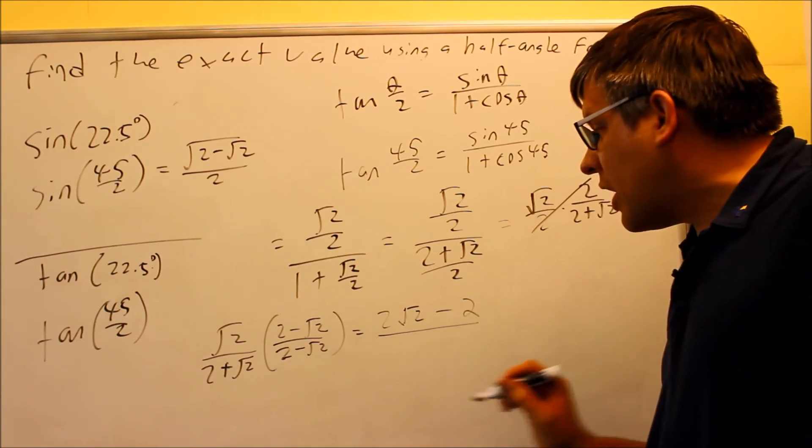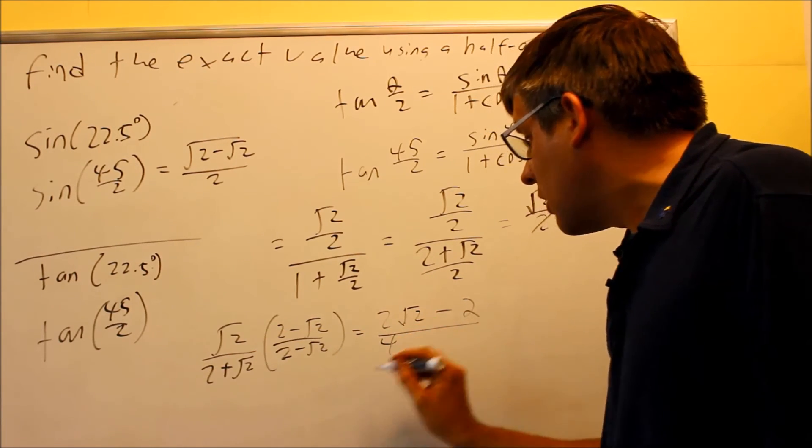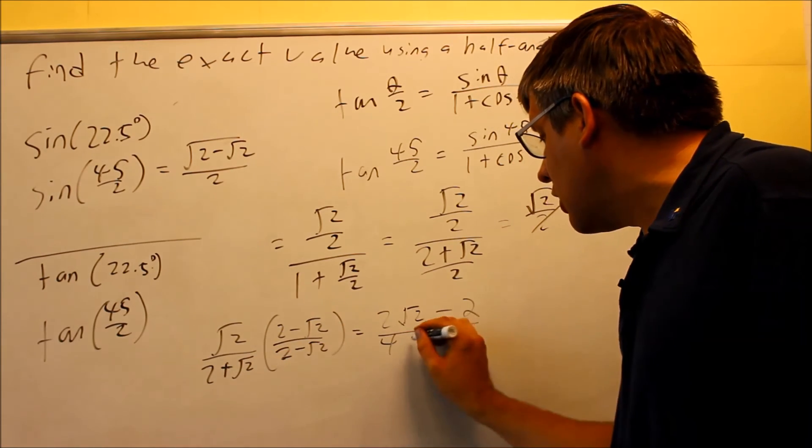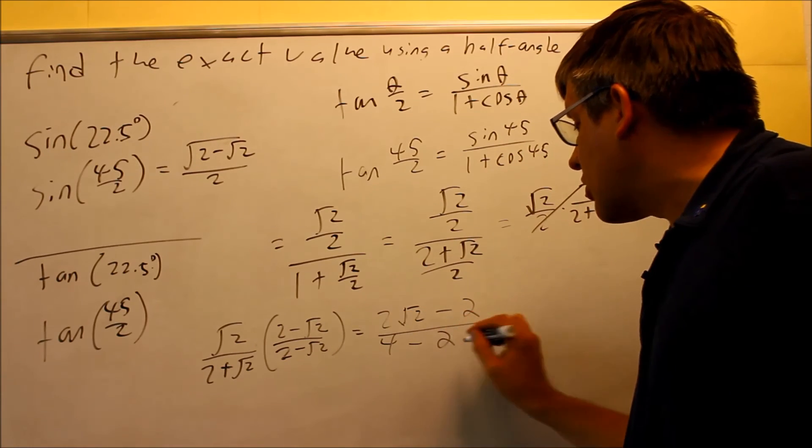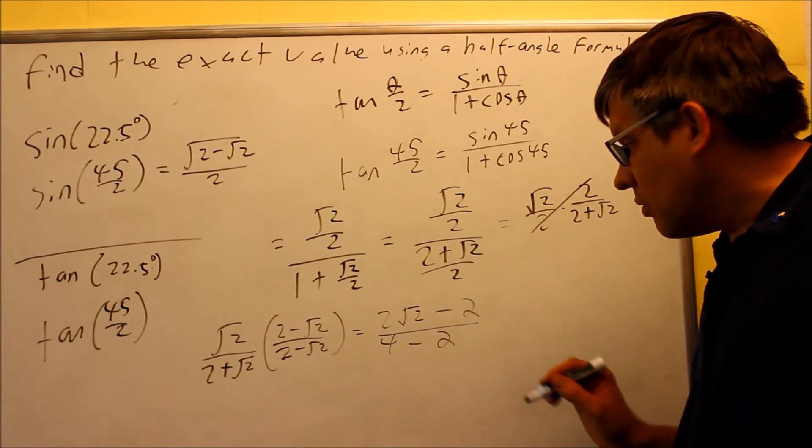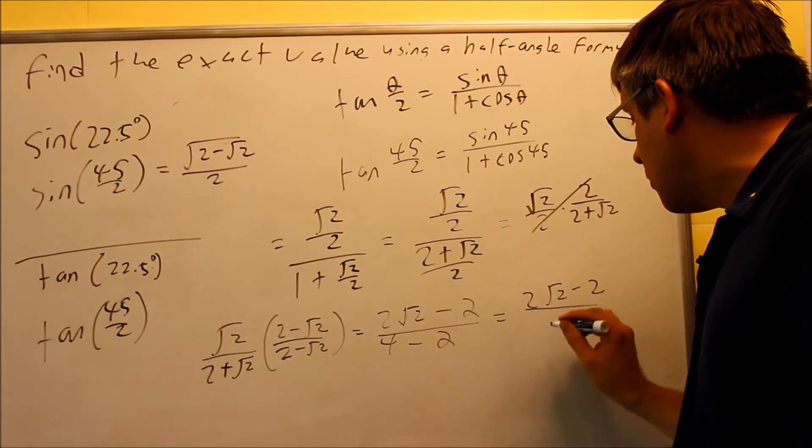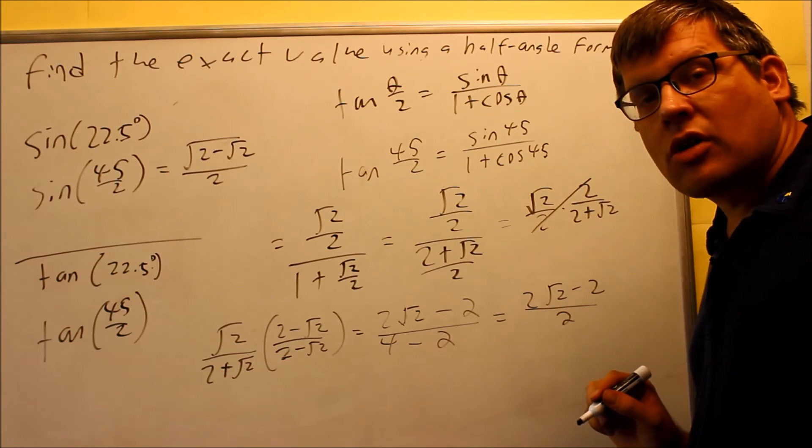Across the bottom, we're going to multiply that. You're going to get 4. You get minus 2 radical 2 plus 2. That's going to cancel. And then you get minus radical 2 times radical 2. We already said was equal to 2. Now keep on going with this. 2 radical 2 minus 2 on the bottom. 4 minus 2 is also equal to 2.